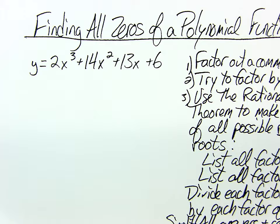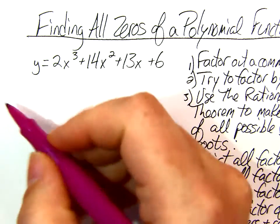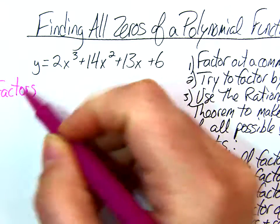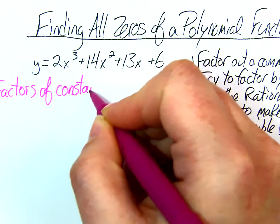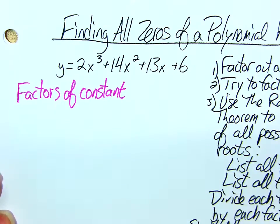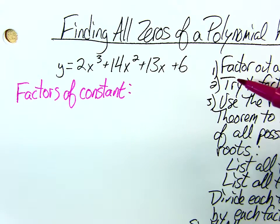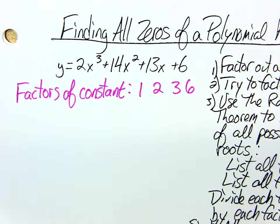So the next thing we do is we make that list of possible zeros. To make that list, the first thing you want to do is write down all of your factors of the constant. So the constant, remember, is the number all by itself. So in this case, it's 6. So what are my factors of 6? 1, 2, 3, and 6.